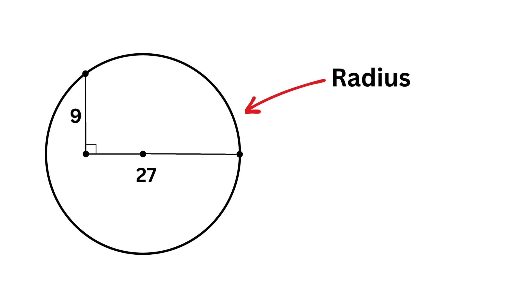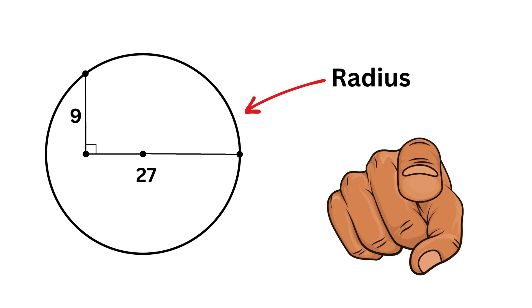So can you solve it? Okay, let us label the radius of this circle as r. So this will be r, right? Now this length is 27 units, so what will be the length of this piece?